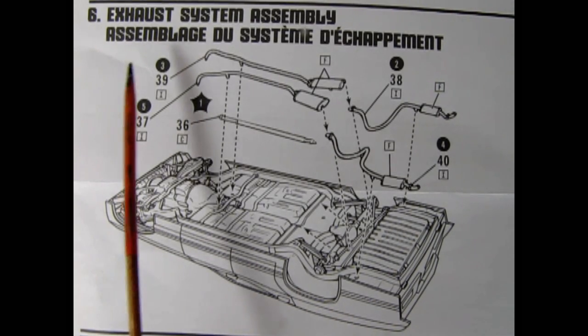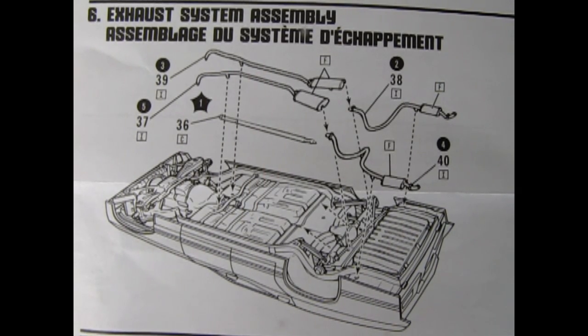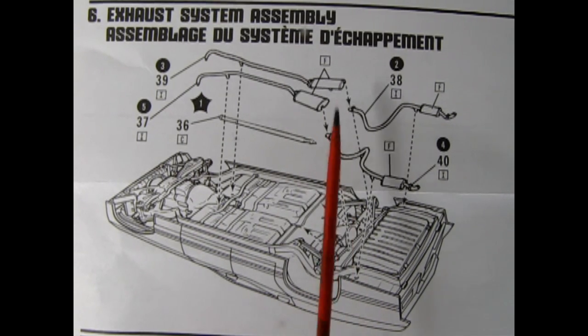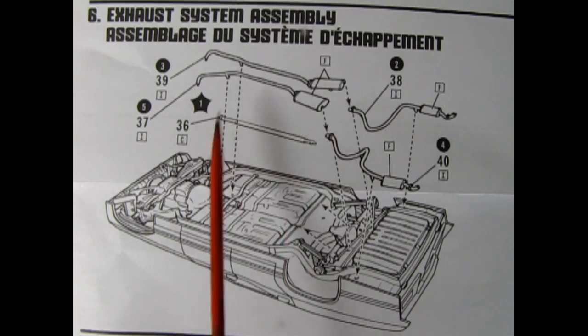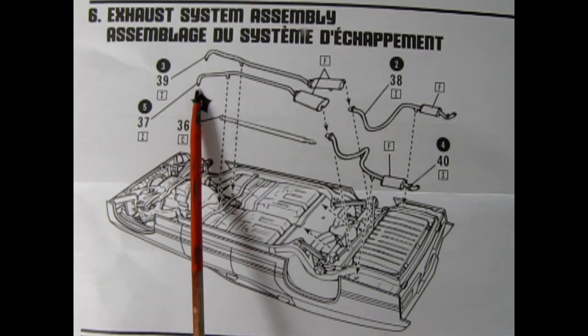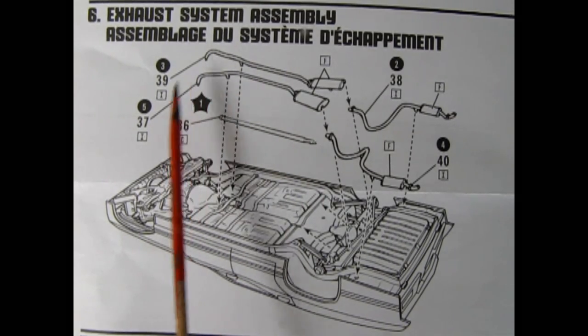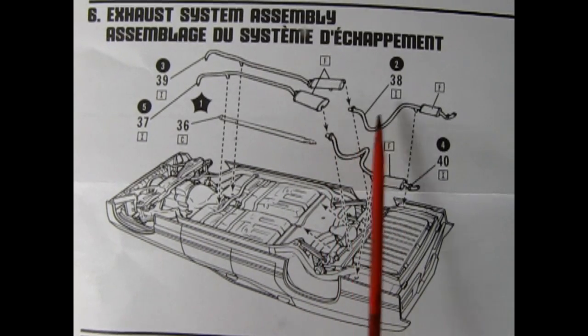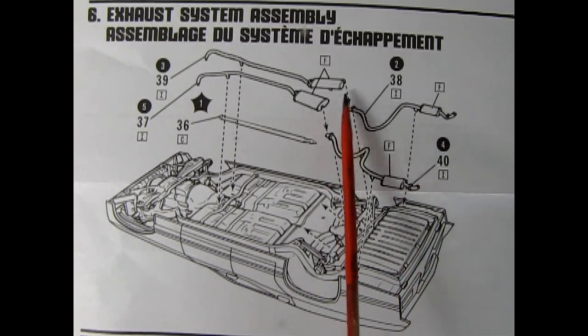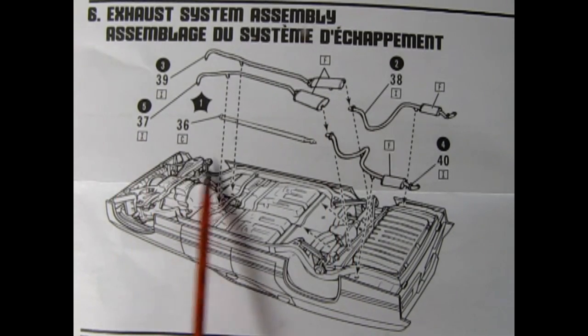Step six, exhaust system assembly. Here we see the undercarriage of the car. We have our drive shaft which connects the back end of the transmission to the differential. Here we have our mufflers and exhaust pipes. We've got the ones that go up front. These have to be attached to the exhaust manifolds and then in the back we have the rear tail pipes with the rear mufflers which get glued into the front mufflers. All this goes down onto that frame.